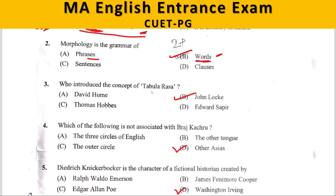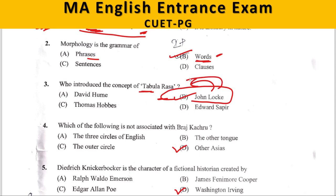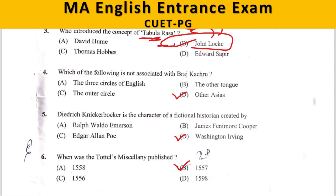Third question: Who introduced the concept of tabula rasa? A. David Hume, B. John Locke, C. Thomas Hobbes, D. Edward Sapir. The answer is John Locke. What John Locke means by tabula rasa is that at the time of birth, the human mind is a tabula rasa — a kind of clean slate on which we can make different impressions.